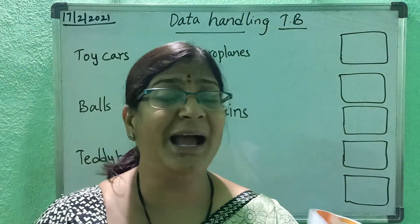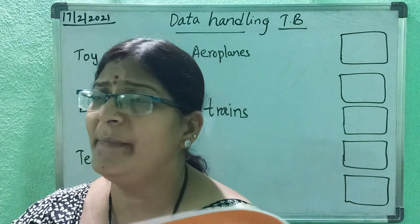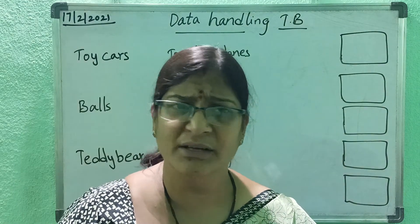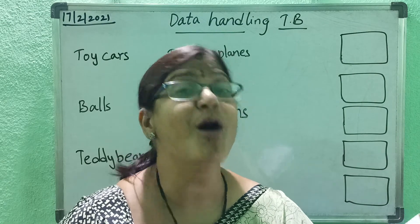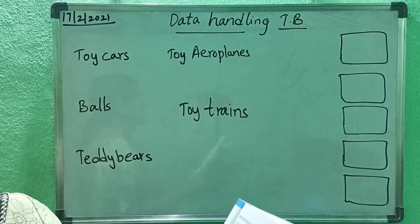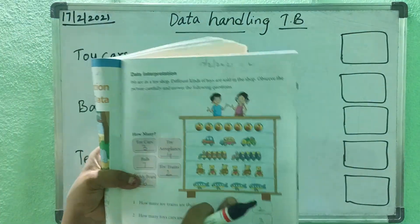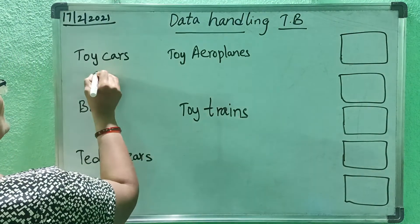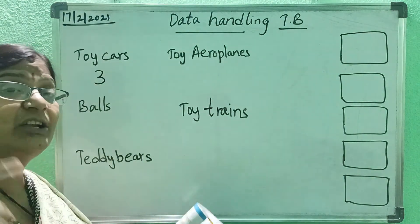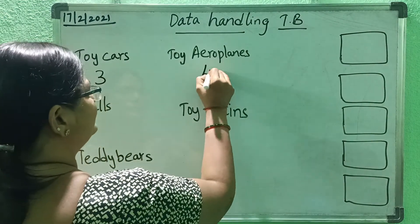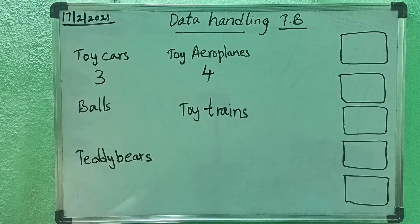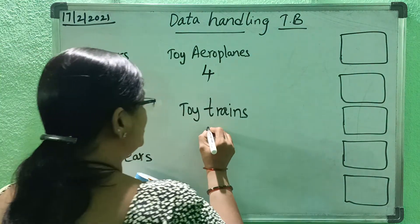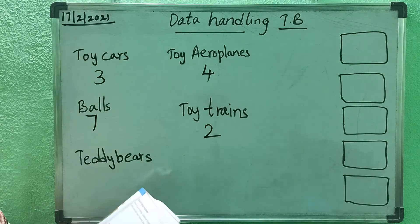Now, we have to sort out the collected information — how many toy cars, airplanes, and balls are there. We have to count and sort. Here they have given the pictures, so we will count. Toy cars: one, two, three — three. Toy airplanes: four. Balls: seven. Toy trains: two. Teddy bears: six. Now we have sorted everything.